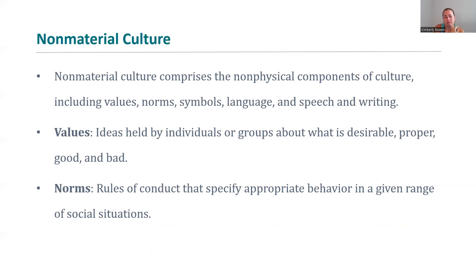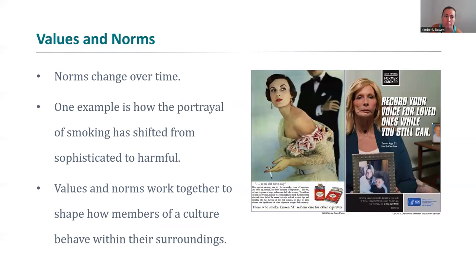Values are the ideas of what is desirable, proper, good, and bad. Norms are the way in which we interact behaviorally given a range of social situations. Norms and values can change over time. An example of this is how we've shifted from smoking being considered sophisticated to it being recognized as harmful. You can talk about really any major social issue and discuss how it has progressed or gone backwards in any given social situation.